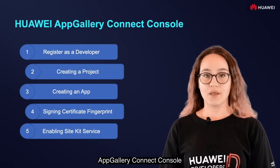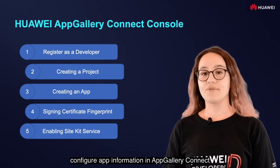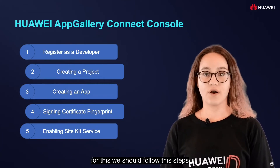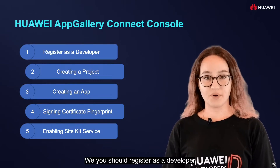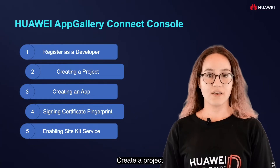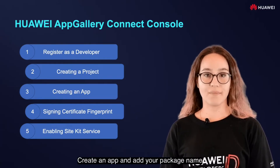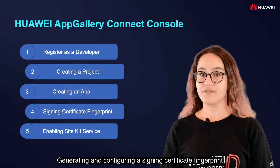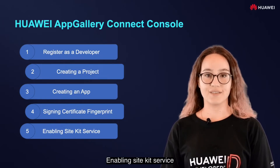Before we start developing an app, configure app information in AppGalleryConnect. Follow these steps: 1. Register as a developer. 2. Create a project. 3. Create an app and add your package name. 4. Generate a configure assigning certificate fingerprint. 5. Enable SiteKit service.